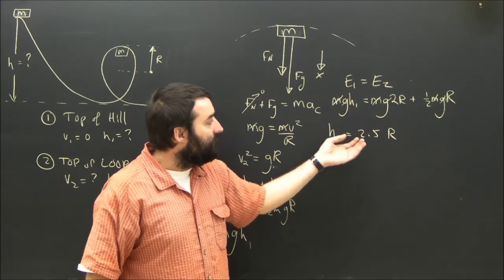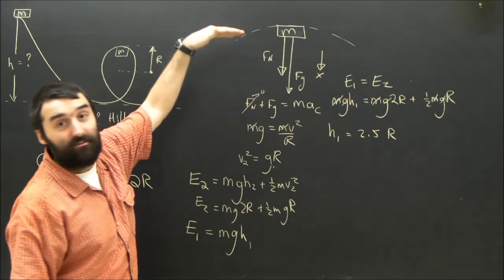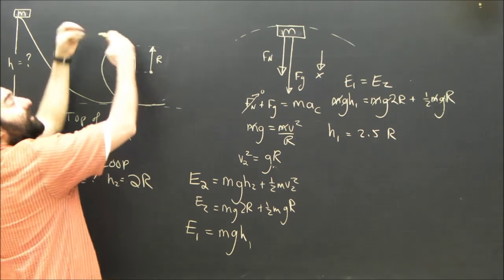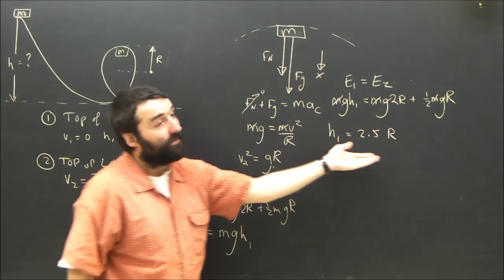The height of the first hill must be two and a half times as big as the loop to give it enough speed to get up to the height and have enough speed left over to actually make it through the loop.